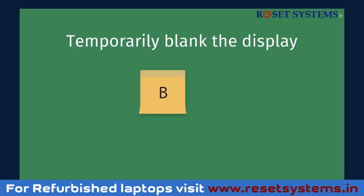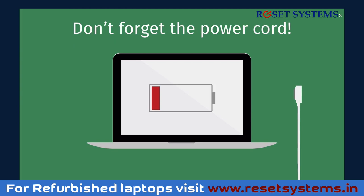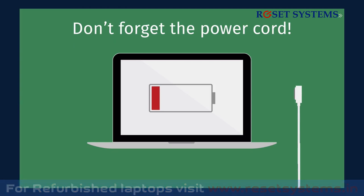Whatever platform you're using, sometimes it's useful to temporarily blank the display. Press B for black or W for white and your display goes completely black or white. And don't forget the power cord — your audience doesn't want to see a low battery warning.